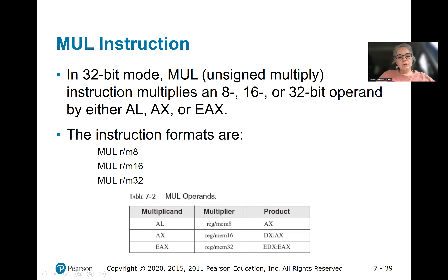So we're either going to use the AL, AX, or EAX register. For 8-bit multiplication, the multiplicand will be in AL. The multiplier will be in a register or a memory location, and the product is going to be found in AX.